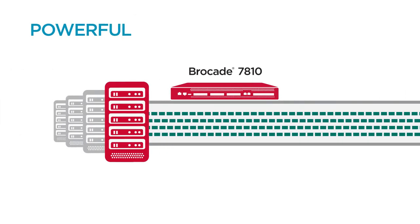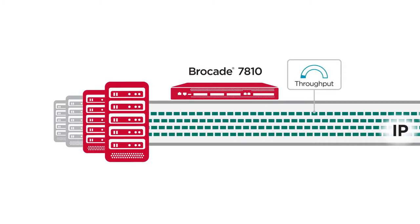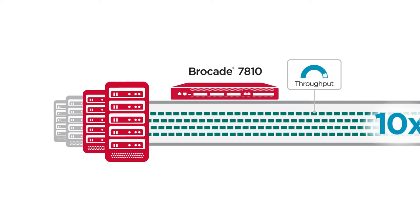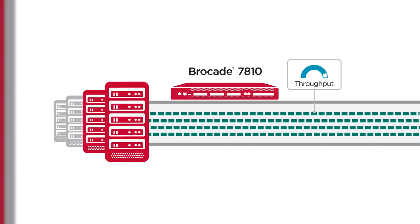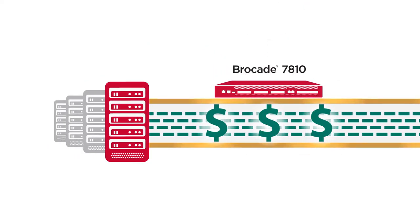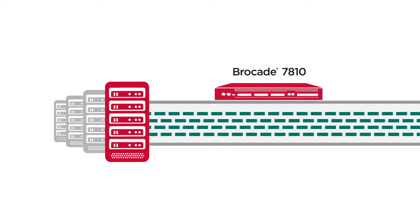It optimizes and compresses fiber channel and IP replication traffic. This achieves at least 10 times the throughput that an array can achieve on its own, which means you can reduce costs by switching to less expensive WAN connections.